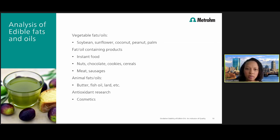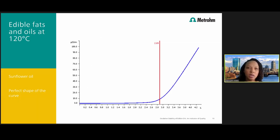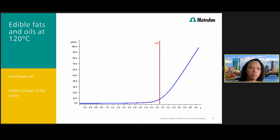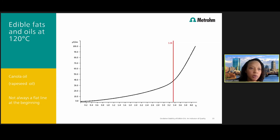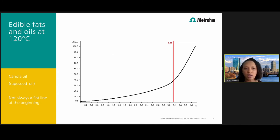Here are a couple of quick examples of edible fats and oils. First, a Ransomat result of a sunflower oil product shows a nice curve shape with a slow initiation period approaching the propagation and termination step, and the induction time is clearly noted on the curve. A second example is canola oil or rapeseed oil. The baseline is not always completely flat at the beginning; however, because we are looking at the second derivative, we are able to determine the induction time just as easily for this curve.